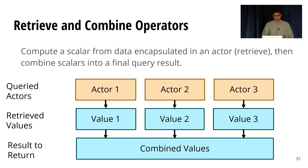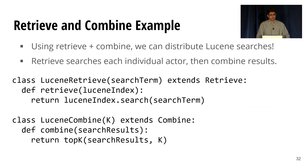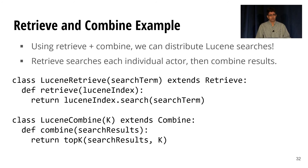Let's look at a couple simple operators: retrieve and combine. Retrieve computes a scalar from data encapsulated in an actor. Then combine combines those scalars into a final query result. Using these two simple operators, we can distribute Lucene searches — retrieve searches each individual actor, then combine combines the results. With these few lines of code, we're obtaining fault-tolerant distributed search, which would require a lot more code if you wanted to implement it from scratch.